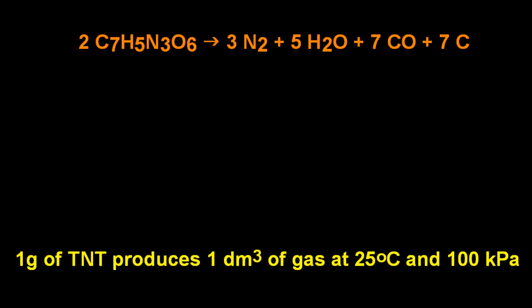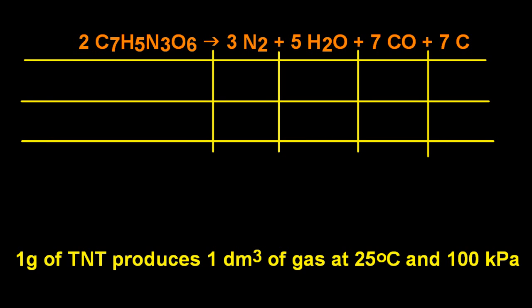All right, I read that a gram of TNT produces a decimeter cubed of gas. 25 degrees C and 100 kilopascals. That's all over the internet. So let's just double check that that's true.